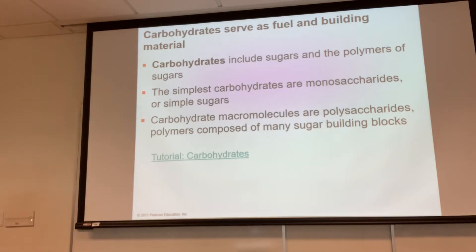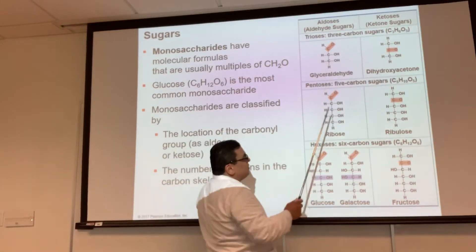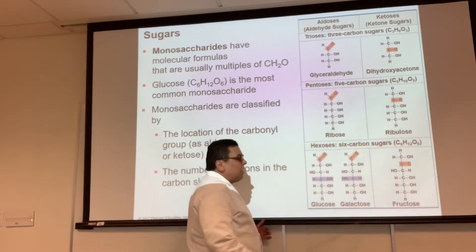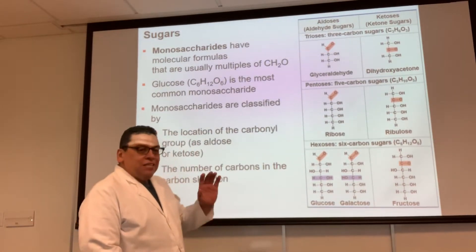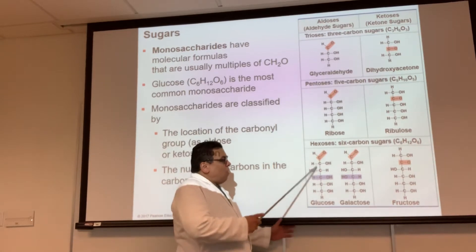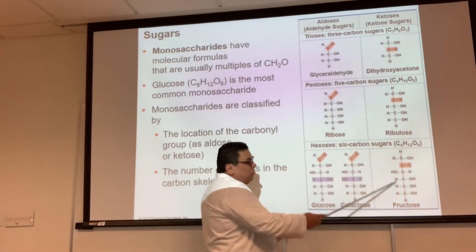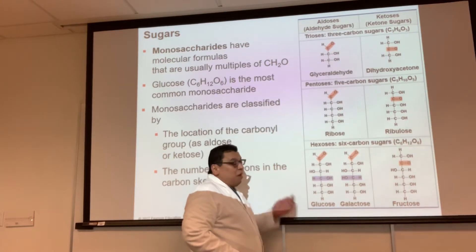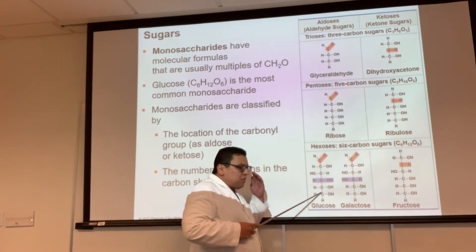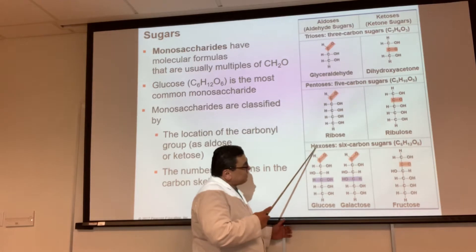The simplest unit of a carbohydrate is the monosaccharide. Glucose is a monosaccharide — very important to know. Galactose and fructose are also monosaccharides, simple single units of sugar. We can also call these hexoses — glucose, galactose, and fructose are all hexoses because of the number of carbons they have: one, two, three, four, five, six. Hexose means a six-carbon sugar.